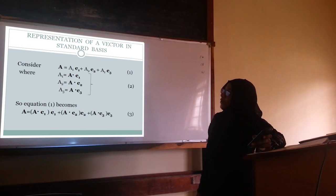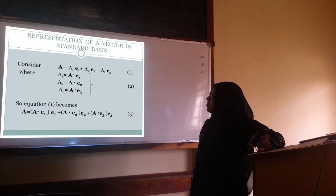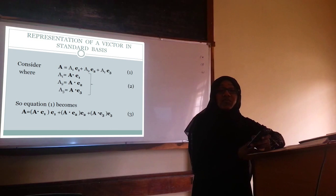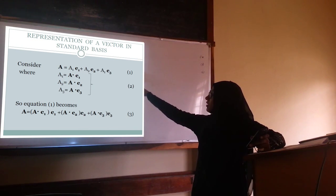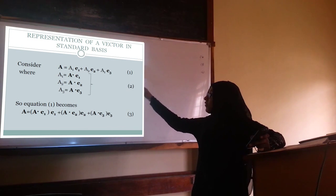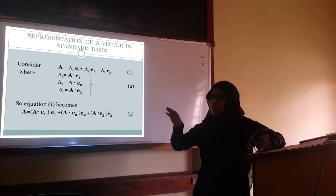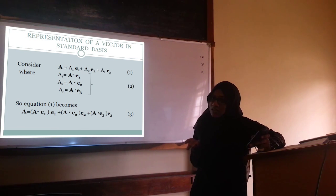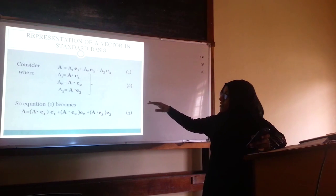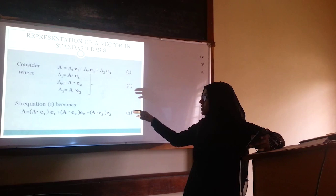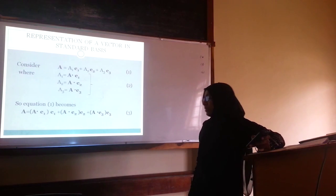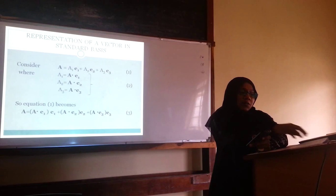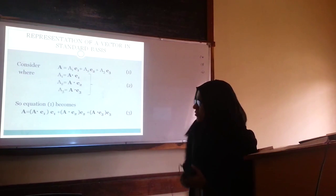Let us consider the representation of a vector A in the standard basis. A is equal to a1·e1 + a2·e2 + a3·e3. Since the basis is orthonormal, the components a1, a2, a3 along the basis vectors e1, e2, e3 are mere projections. Therefore, a1 = A·e1, a2 = A·e2, and a3 = A·e3. Substituting, A = (A·e1)e1 + (A·e2)e2 + (A·e3)e3.